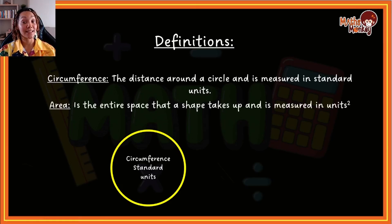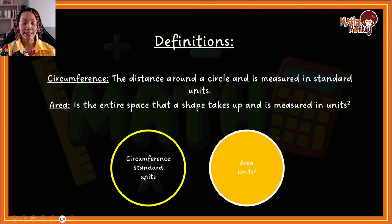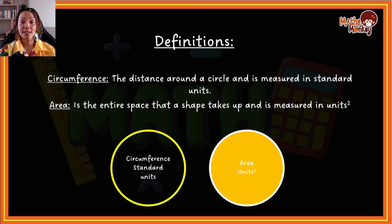Area, however, is the entire space that a shape takes up and is measured in units squared. So here the area is actually the entire circle. What we mean by units is: when you're calculating circumference, if the question is in millimeters or centimeters, then your answer is going to be in those same units. However, for area, if your units are centimeters, then your answer is going to be centimeters squared. Whenever we calculate area, the units are always squared.